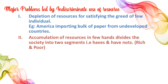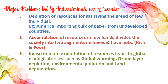Accumulation of resources in few hands divides society into two segments: the haves and have-nots. Rich people accumulate more resources because they are wealthy, and the poor cannot. Indiscriminate exploitation of resources leads to global ecological crises such as global warming, ozone layer depletion, environmental pollution and land degradation.